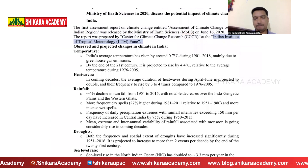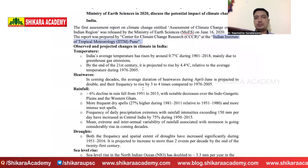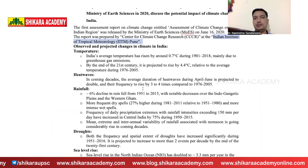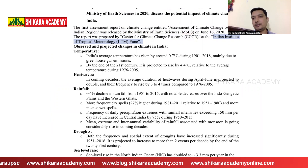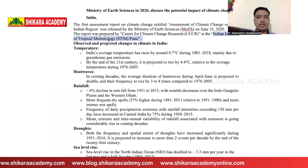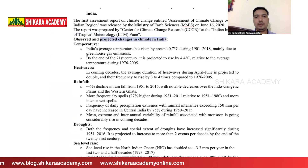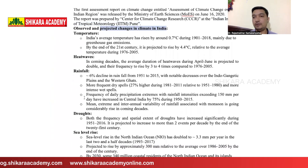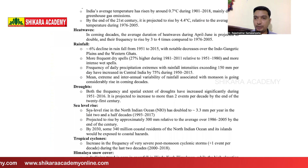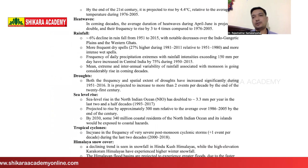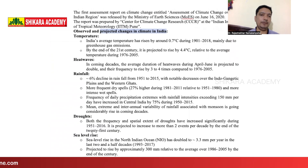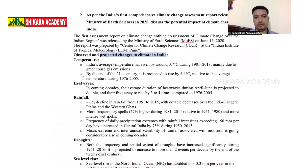The document was released on June 16, 2020 and was prepared by the Centre for Climate Change Research at the Indian Institute of Tropical Meteorology, Pune. It is a very important document, and from it we need to cover key points selectively. The main subheadings to cover are observed and projected changes in climate in India.